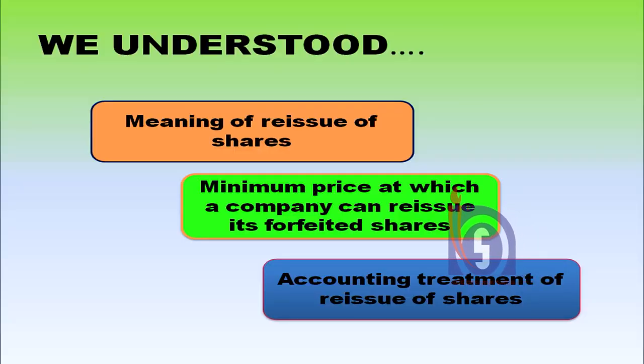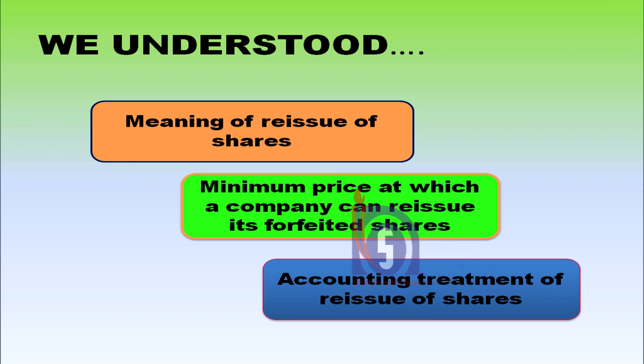So these were the various situations covering how accounting entries need to be made for both forfeiture and reissuance of shares, and then the amount to be transferred to capital reserve. In this chapter we have learnt about the meaning of reissue of shares, the minimum price at which a company can reissue its forfeited shares under various situations, and the accounting treatment of reissue of shares. Your clarity will improve further with more practice on different kinds of situations. Thank you very much.